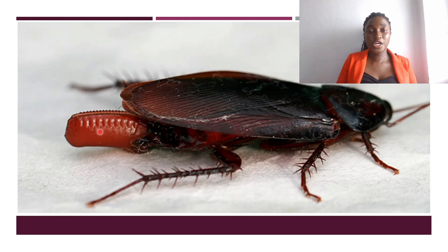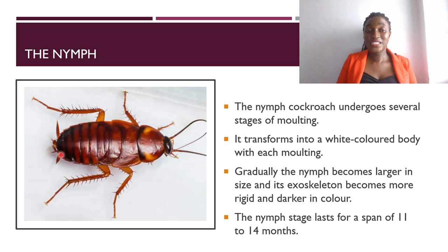This is a clearer picture of the egg case at the abdominal region of the adult. For the nymph stage, as already mentioned, it looks exactly like the adult — that is why this is an incomplete metamorphosis. The nymph cockroach undergoes several stages of molting; it transforms into a white-colored body with each molt, and gradually the nymph becomes larger in size as its exoskeleton becomes more rigid and darker.